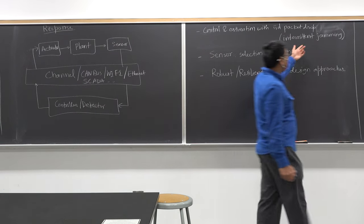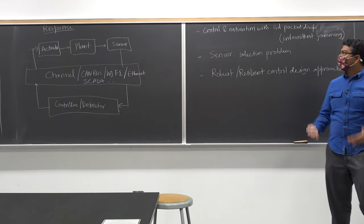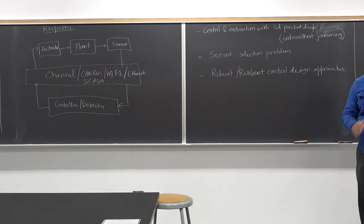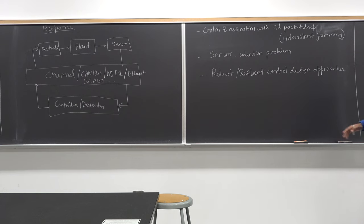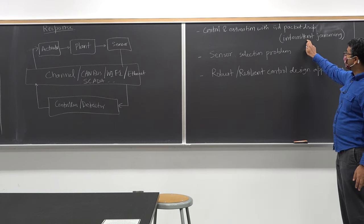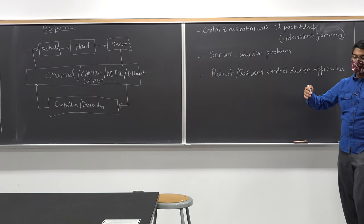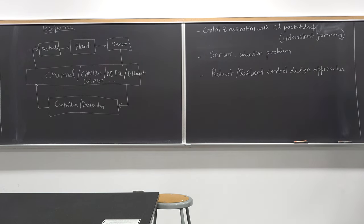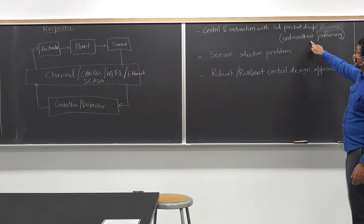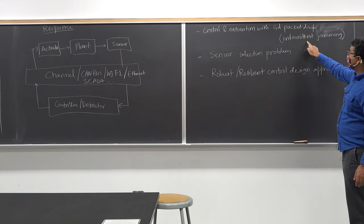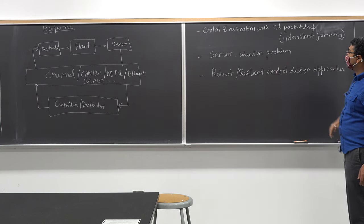When you have continuous jamming, the jammer is very powerful and there is not much you can do — the attack is successful. When you have intermittent jamming, where jamming happens at random time intervals, there is something you can do. That is what we are going to study, and it is also the topic for Assignment 3: how to design control strategies under intermittent jamming.